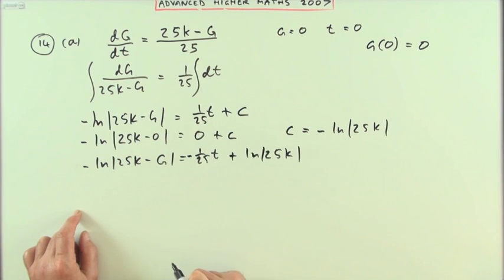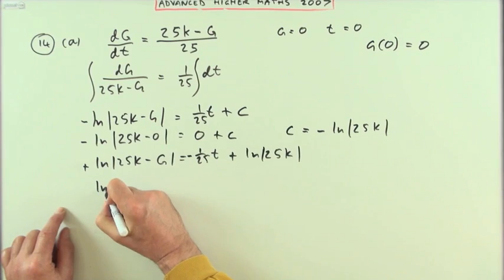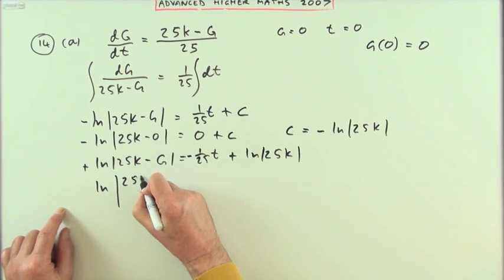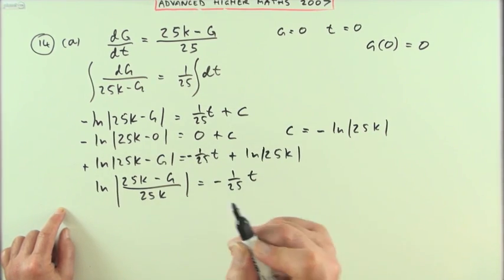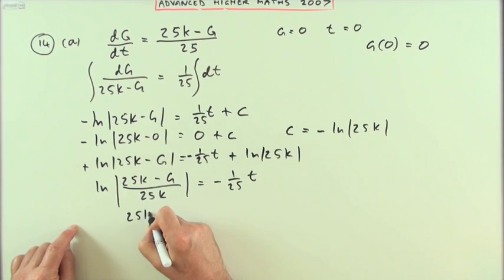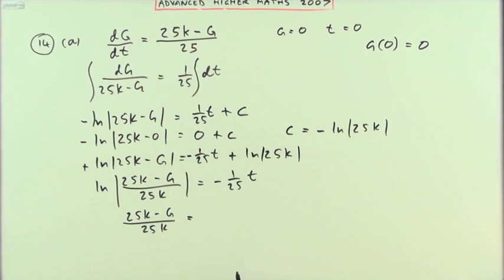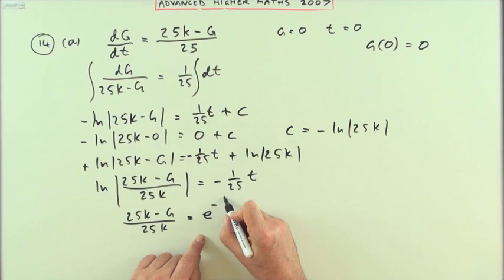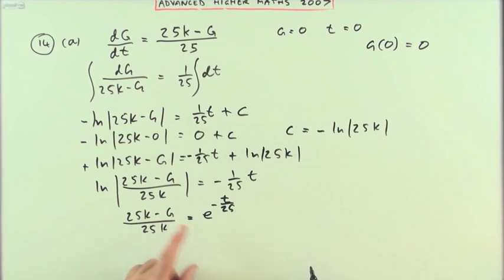Take that over so I can group the logarithms. I'll be subtracting that, and when you subtract the logarithms you'll be dividing their arguments. So I've got (25k - g)/25k = -1/25 of t. Get rid of the log now. Inverse other side exponential. So I've got (25k - g)/25k equals e to the -t/25. Now I've just got to extract g from in here. So I'll have to take that across and multiply.